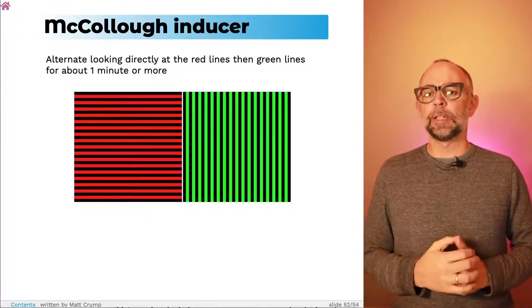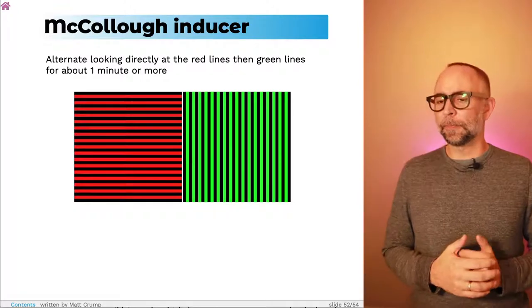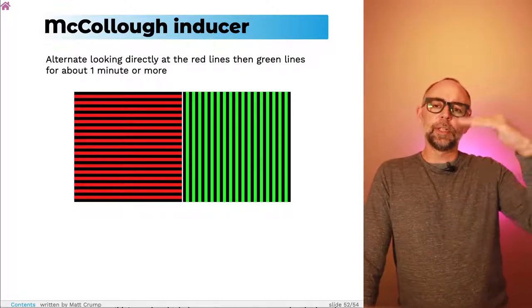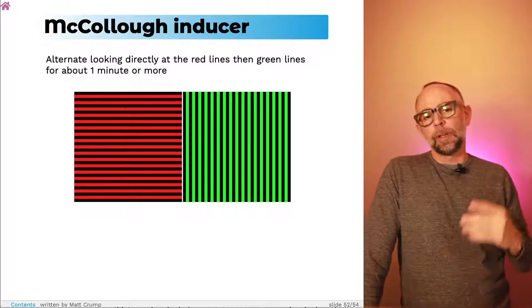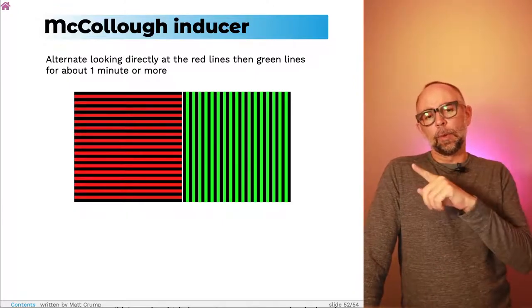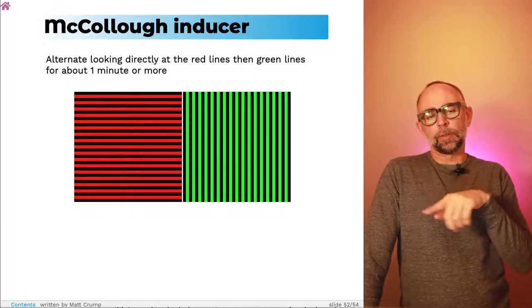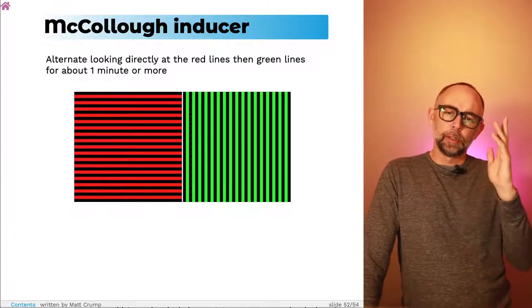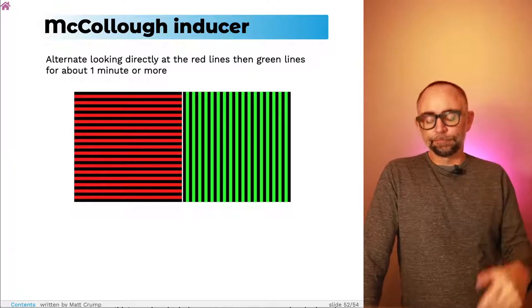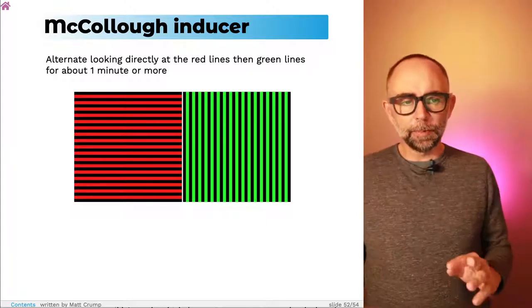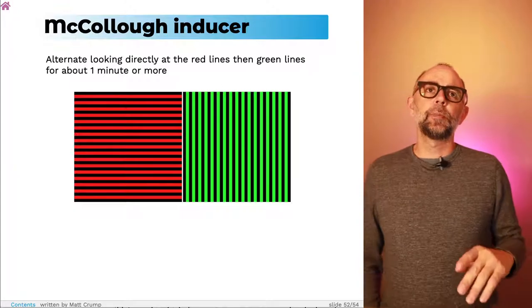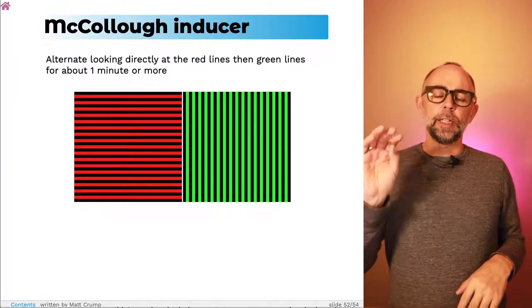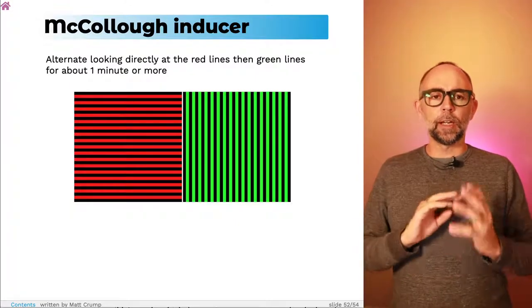What we're looking at are two inducer stimuli. The one on the left is just some horizontal bars, they're black and red, and the one on the right, some vertical bars, black and green. In a proper demonstration of this, you would be sitting in a dark room and you would be staring at each of these one at a time. And what this will do is it will basically make a little imprint on your visual system.